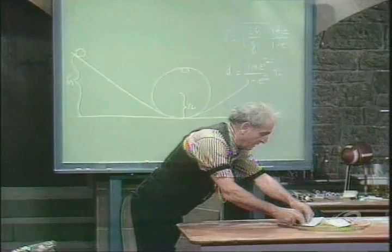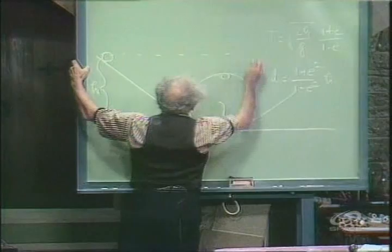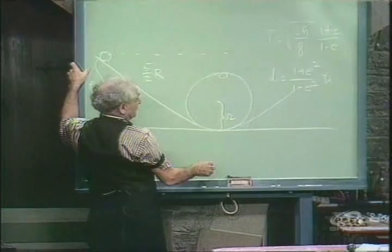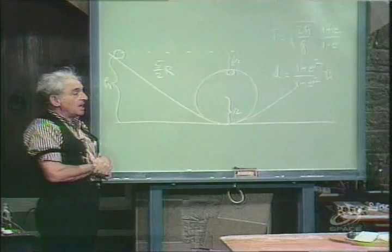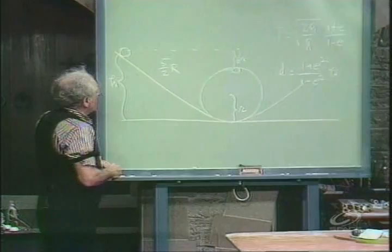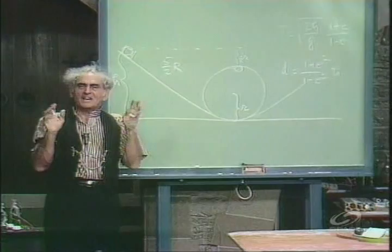From what height must this be dropped? Answer: five-halves the radius — that is, two and a half radii. There's one radius, there's two radii, there's a half a radius more. Now, what do I wish to point out? The books always say five-halves R, and it shows a ball rolling. And that is not right. Five-halves R is for a block sliding without friction — an idealization of the case.